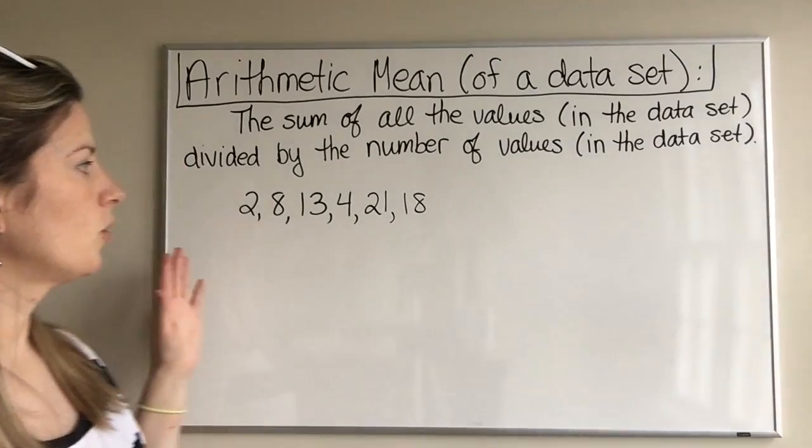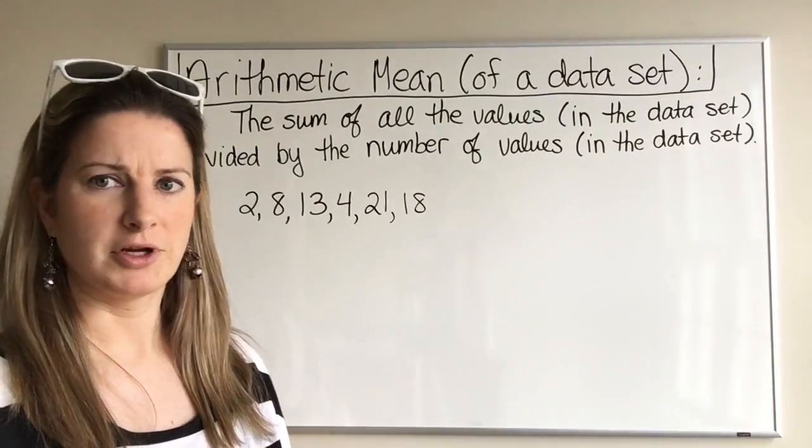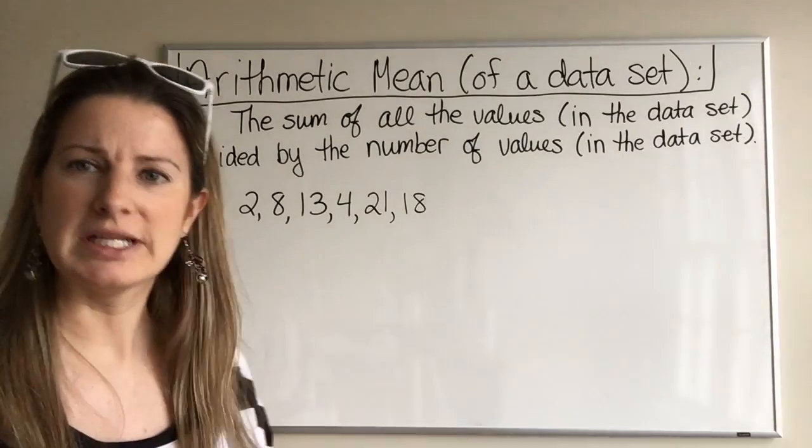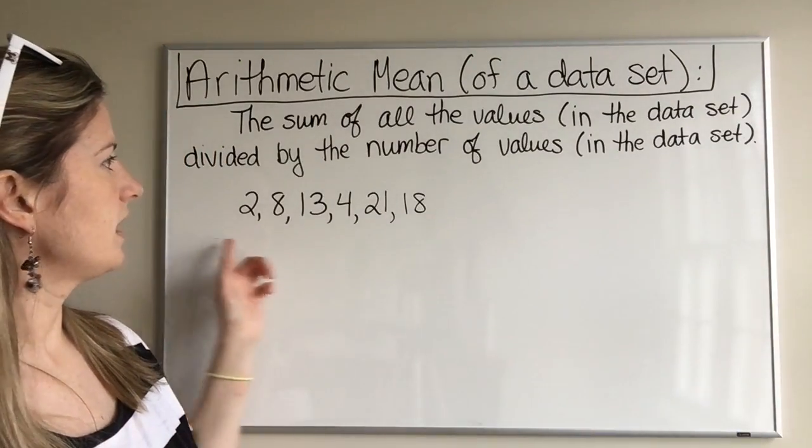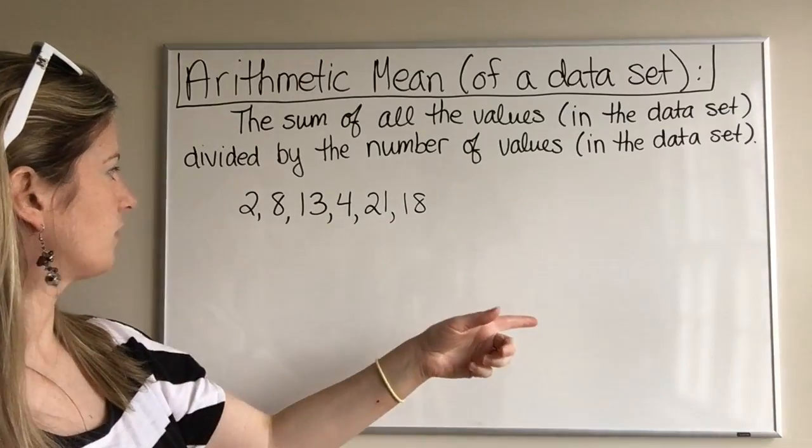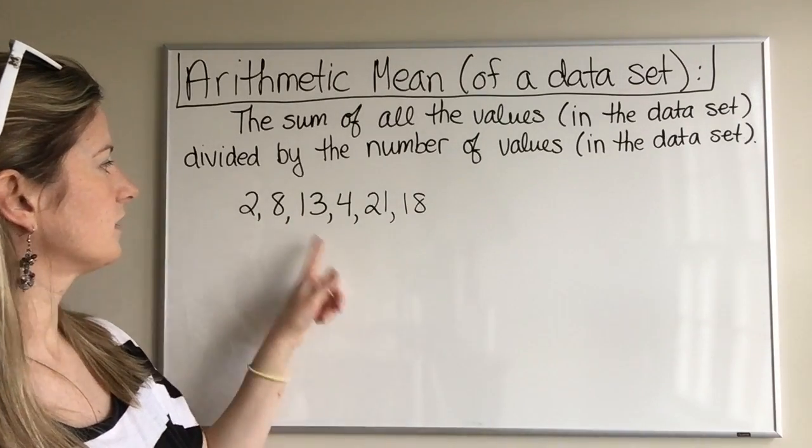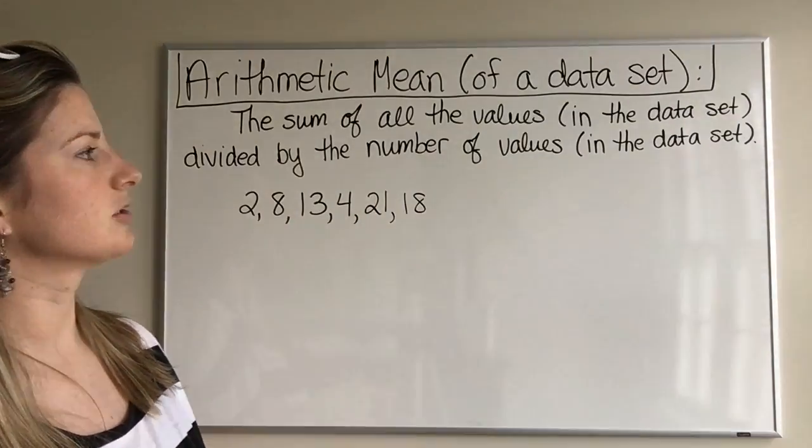You are probably very familiar with this, but let's just do an example to make sure that you definitely understand. So here is a set of values right here: we've got 2, 8, 13, 4, 21, and 18.